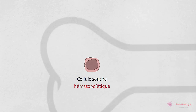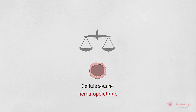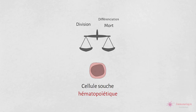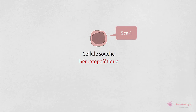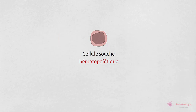Quel que soit leur lieu de résidence, le nombre des cellules souches hématopoïétiques est strictement contrôlé par un équilibre entre la division cellulaire, la mort et la différenciation. Les cellules souches hématopoïétiques expriment des protéines sur leur surface cellulaire, telles que le CD34, SCA1 et le C-Kit. Ces protéines servent de marqueurs utiles permettant l'identification et l'isolement de cette population.